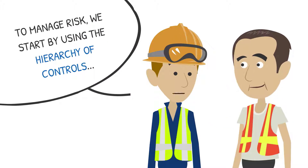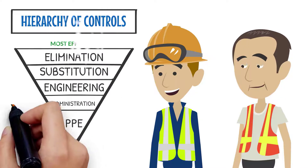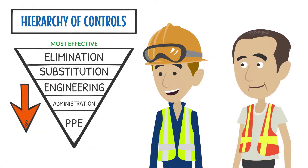To manage risk, we start by using the hierarchy of controls. The hierarchy contains elimination, substitution, engineering, administration, and PPE, and they range from most effective to least effective.